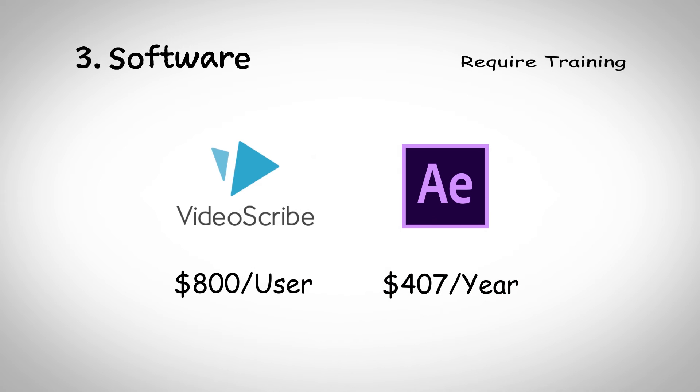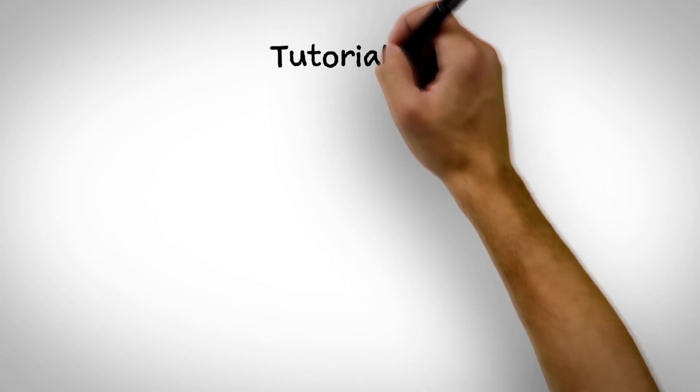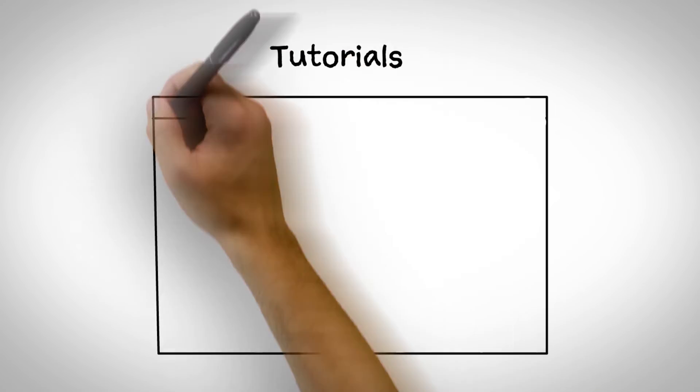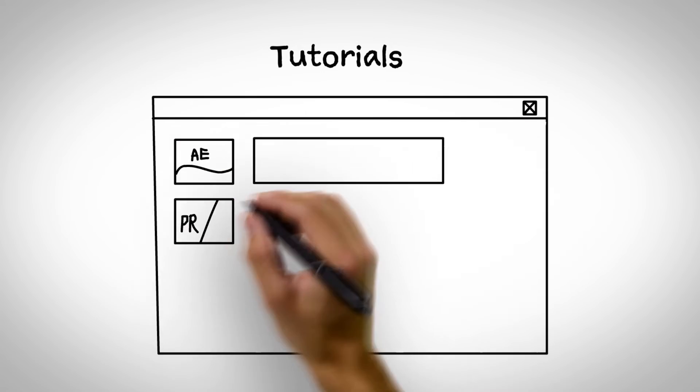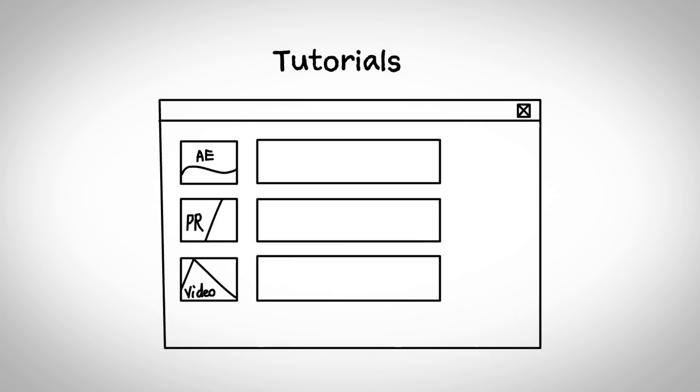Method three — software: use an animation program like VideoScribe or After Effects to create the animation. These programs require tutorials and training, so of course there is real cost and time involved beyond just the cost of the software.